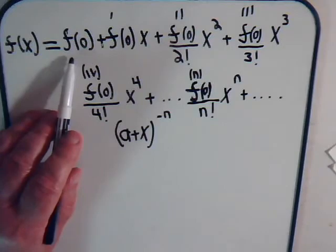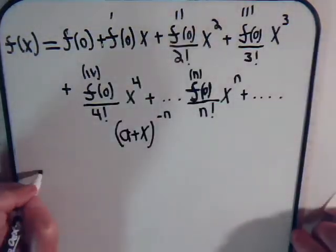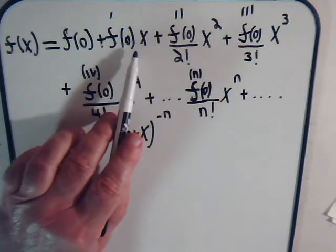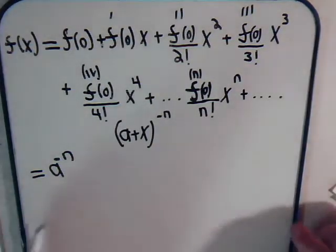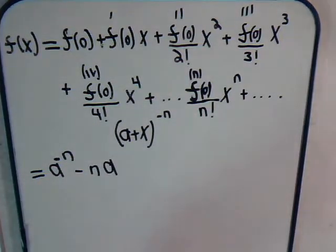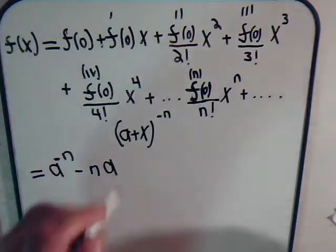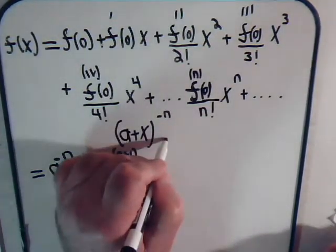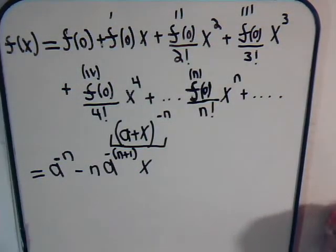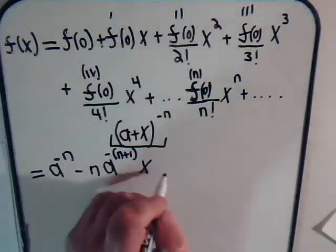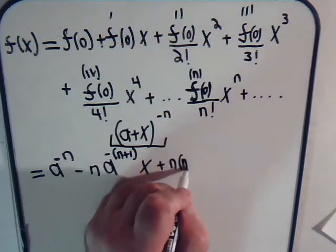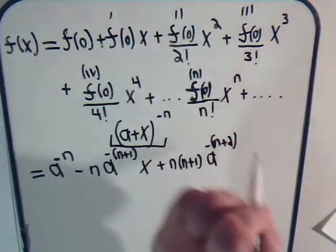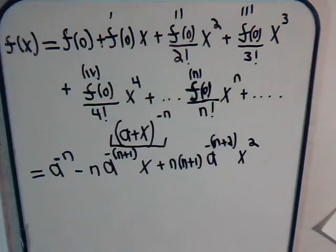Let's go and plug these values into the Taylor series formula and see what kind of expression we get for (a + x) to the minus n. Here we have f of 0, that's just a to the minus n. Then f prime of 0 times x: that's minus n times a to the minus n minus 1 — we can factor out the negative 1 and say minus n plus 1 — times x. The next term is plus n times n plus 1 times a to the minus n plus 2 times x squared.